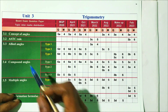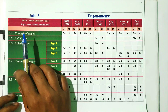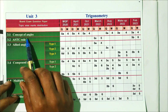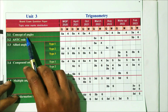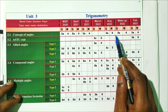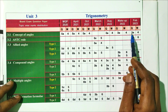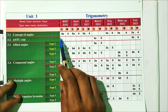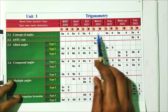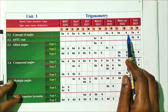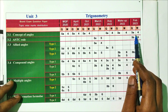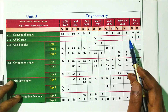Topic 3.1 covers the concept of angles — radians to degrees and degrees to radians. Looking at the whole question paper formula: 5π/180. With one formula, you can easily score 4 marks.